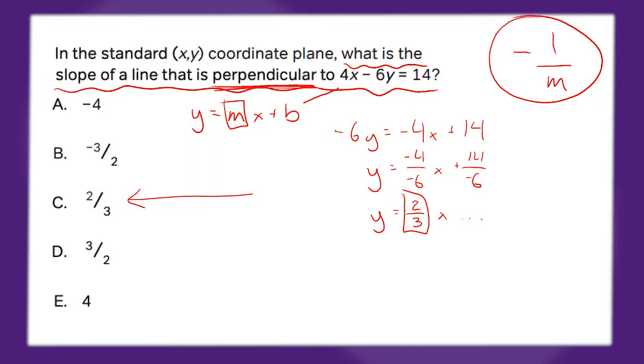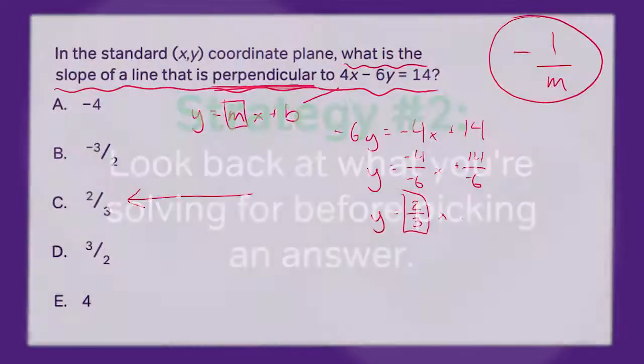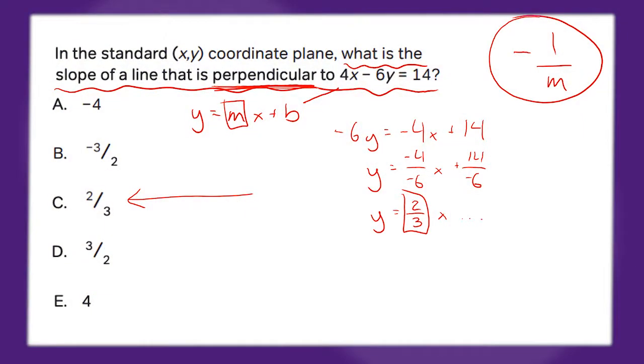So we're going to build on our previous strategy with our second strategy. Before picking an answer choice, look back to make sure that what you have is what you were supposed to be solving for. Since we've already noted it on our paper, this step is surprisingly quick for how effective it is. Let's demonstrate with this problem. So, okay, I solve for m, but based on my circled portion, I really want the negative reciprocal of m. So I plug in what I have for m, there's a negative, go ahead and flip it, and my answer is B. This took an extra five seconds and it saved me the problem.